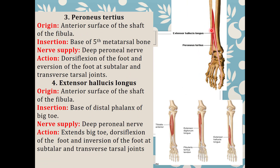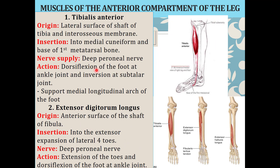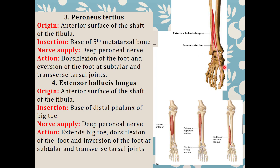The third muscle is peroneus tertius — a small muscle originating from the anterior surface of the shaft of the fibula and inserted over the base of the fifth metatarsal on the lateral side. It is supplied by the deep peroneal nerve. Its action is dorsiflexion and eversion of the foot at the subtalar and transverse tarsal joints. Remember: all muscles inserted over the medial side do inversion, and all muscles inserted over the lateral side do eversion — so peroneus tertius, inserted laterally, does eversion.